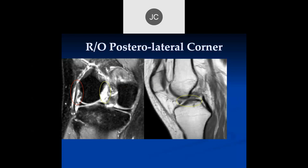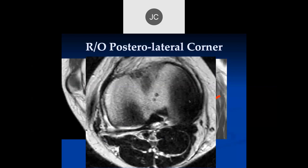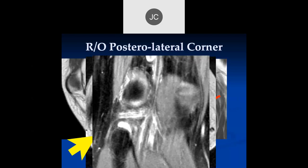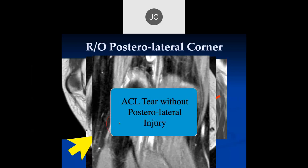Looking at the axial images, what do you think about the soft tissue planes? The soft tissue planes look relatively intact. Here is the popliteal fibular ligament — it's intact. That's typically torn with posterolateral corner injuries. So this was an ACL tear without a posterolateral corner injury — just an isolated ACL tear.